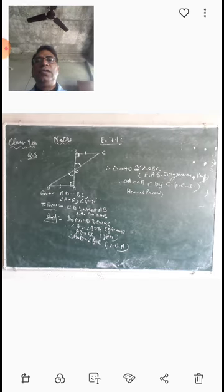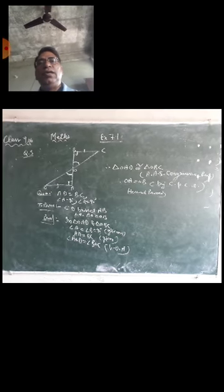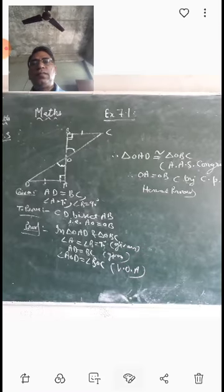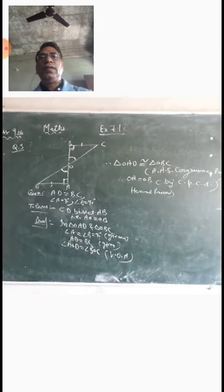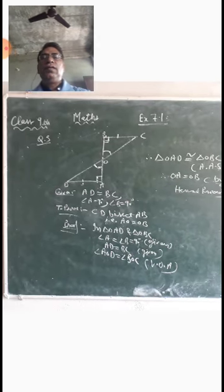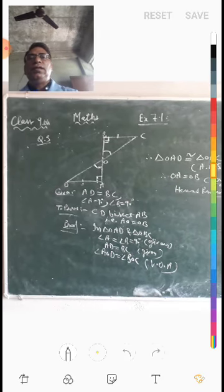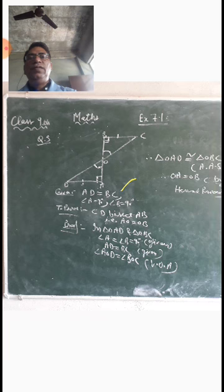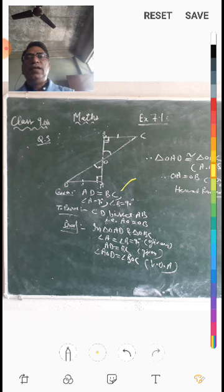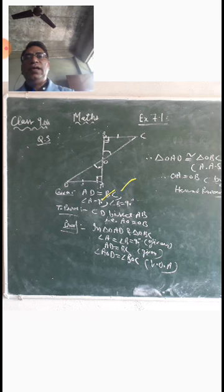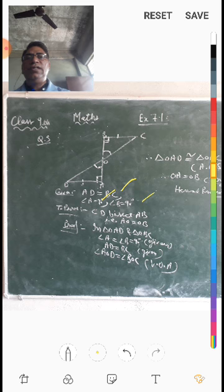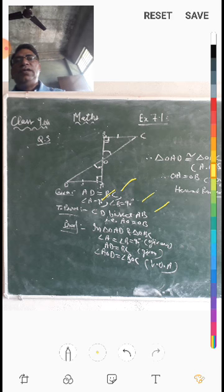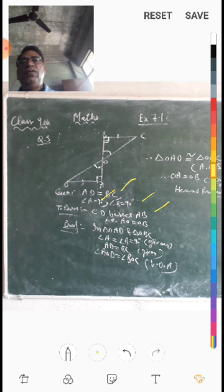Question number 3. Given: AD equal to BC, and angle A equals 90° and angle B equals 90°. We have to prove that CD bisects AB — meaning the line CD bisects AB into two equal parts.